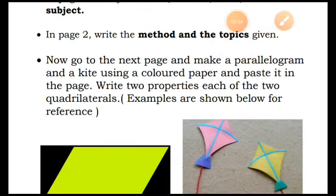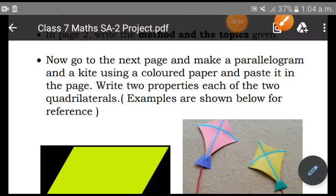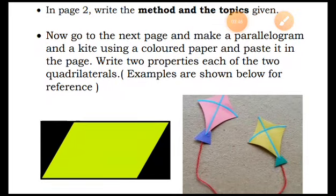For the first part of the project, you are asked to make a parallelogram and a kite using colored paper and paste it on the page. You will use one page each for each type of quadrilateral. On the third page, make the parallelogram — you can use any kind of colored paper like chart paper or marble paper — and then write two properties of the parallelogram.